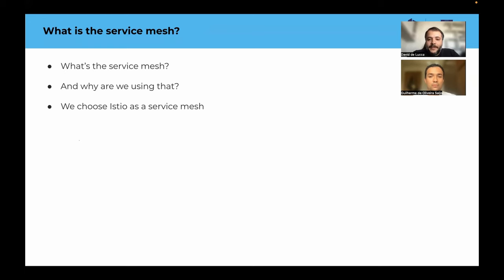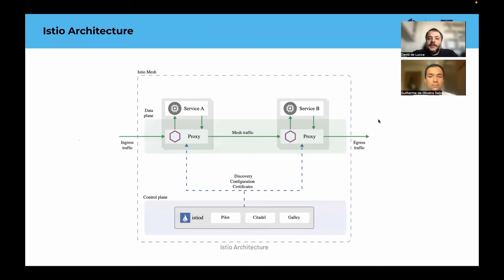We chose Istio as a service mesh application because we have a complex microservice architecture. Talking about Istio architecture, we can speak in terms of data plane and control plane. The data plane is composed of proxies deployed as sidecars which control all network communication between microservices. The control plane manages and configures the proxies. Istio has the Envoy container deployed as a sidecar with the application — in our case with the microservices — and Istiod, which provides service discovery, configuration, and certificate management. Istio also has an admission controller, a mutating webhook. When we create a new pod, the Kubernetes API server calls the Istio service to synchronize configuration.